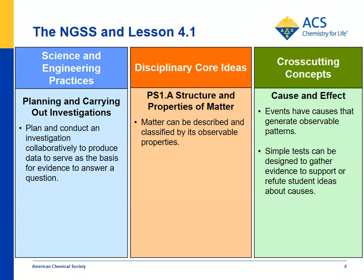For disciplinary core ideas — structure and properties of matter — matter can be described and classified by its observable properties. In this case, students describe and classify objects based on whether they sink or float. For cross-cutting concepts — cause and effect — events have causes that generate observable patterns. The causes are that substances have characteristic properties that cause them to either sink or float, and students do simple tests to see that objects made of the same materials tend to either float or sink in a similar way.